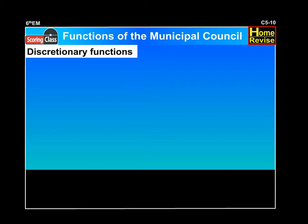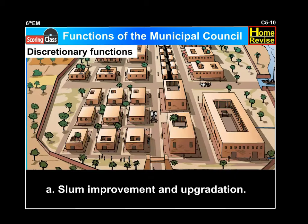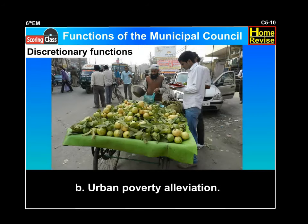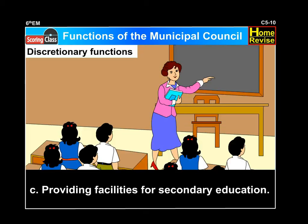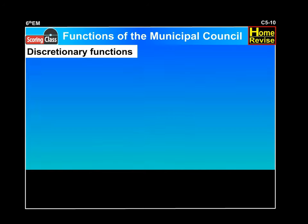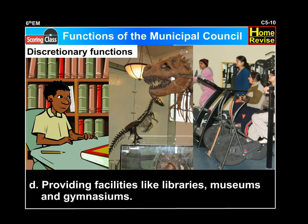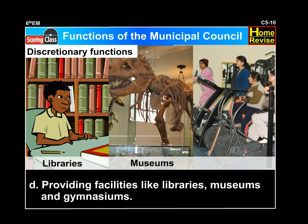Now let us see the discretionary functions. A. Slum improvement and upgradation. B. Urban poverty alleviation. C. Providing facilities for secondary education. D. Providing facilities like libraries, museums and gymnasiums.